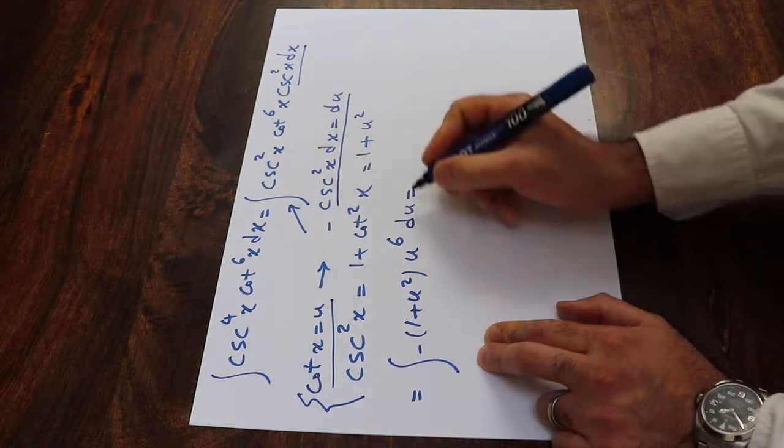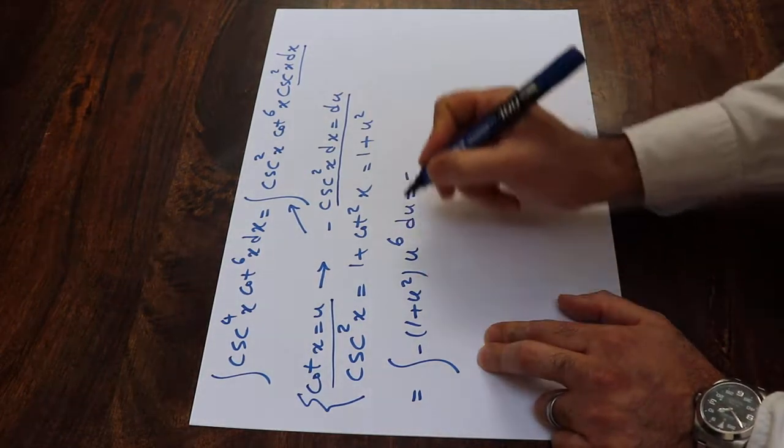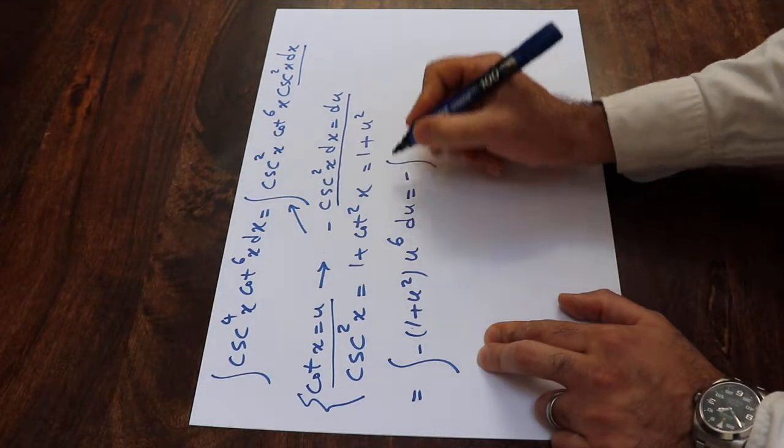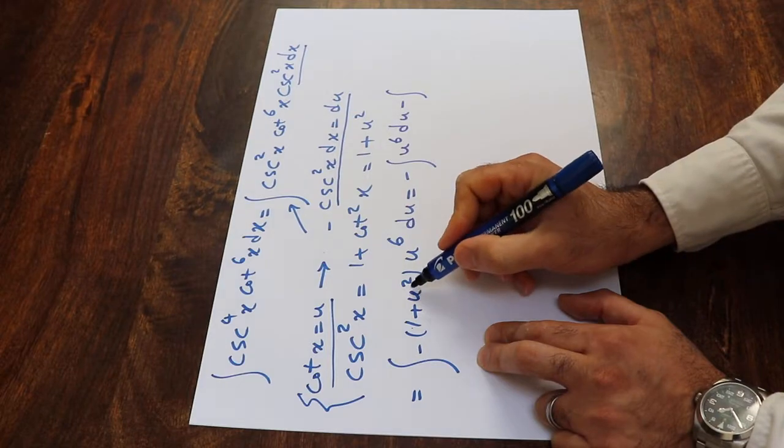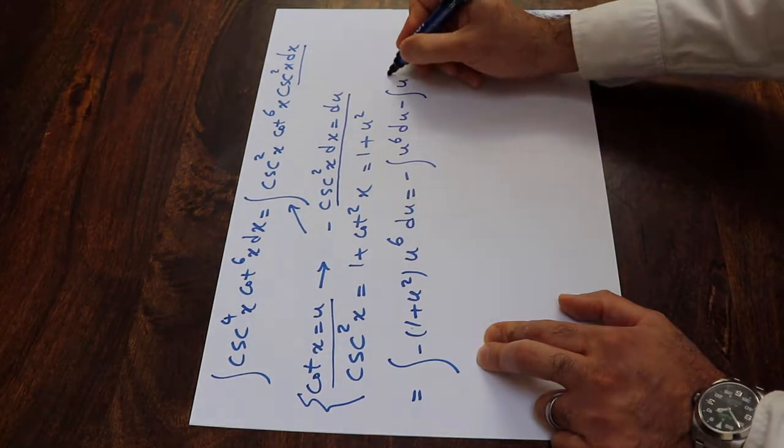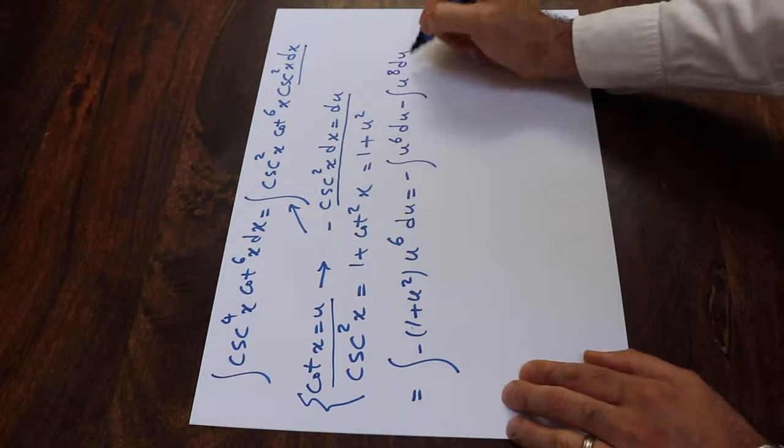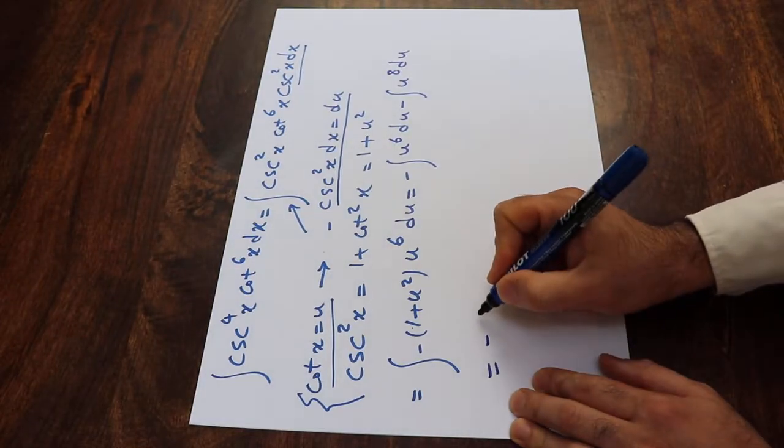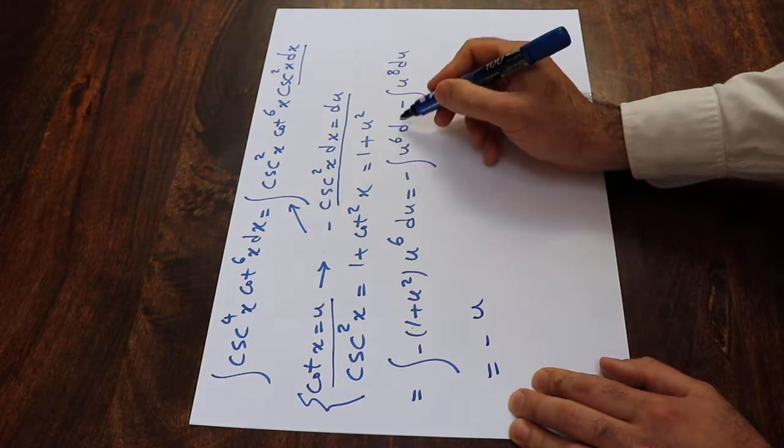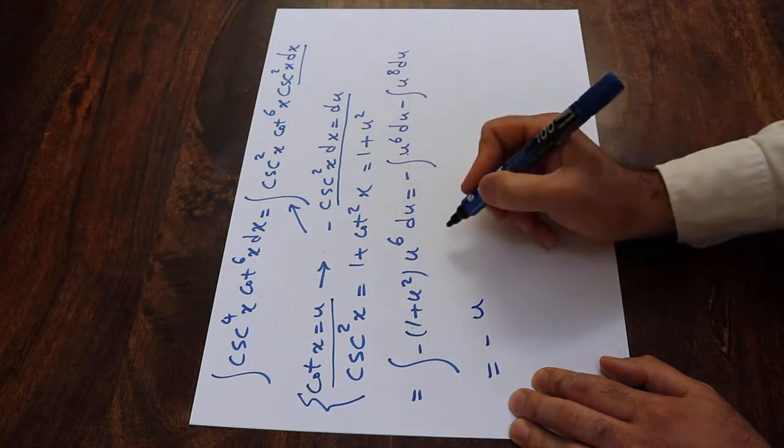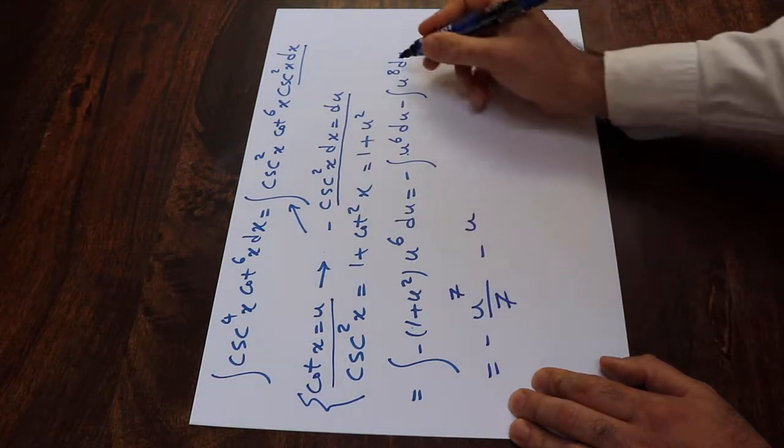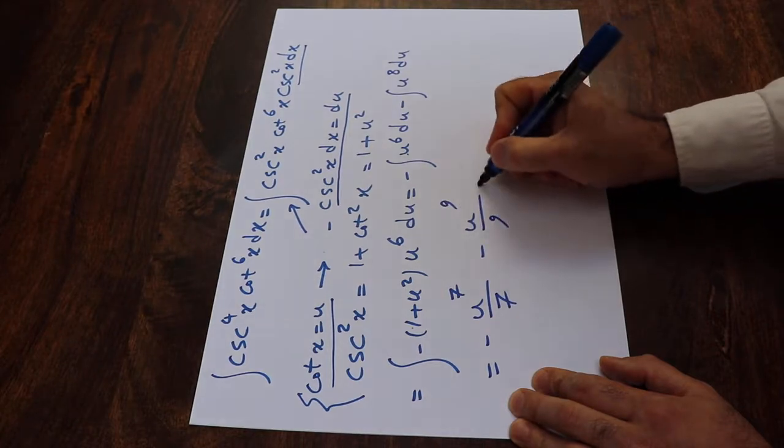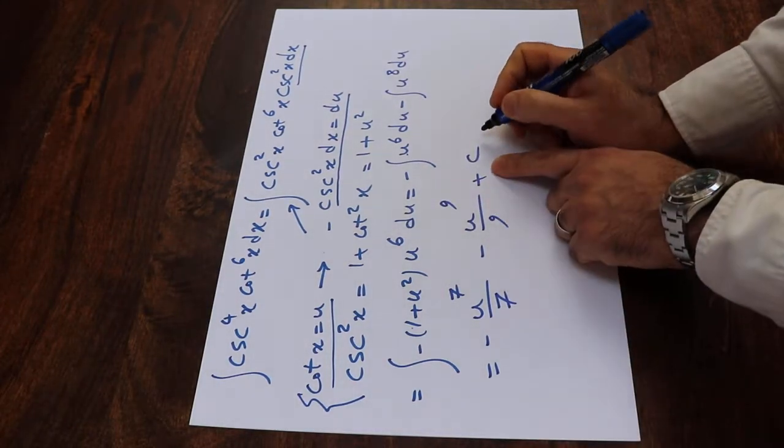So this integral now will be equal to minus integral of u to the 6th du minus u to the 8th du. And this will be equal to minus u to the 7th divided by 7 minus u to the 9th divided by 9 plus C, which is the constant of the integral.